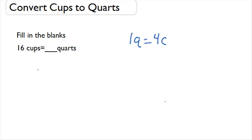Well, if we have sixteen cups and we know that every four cups is equal to one quart, we can divide our sixteen by four and end up knowing that we have four quarts within those sixteen cups.